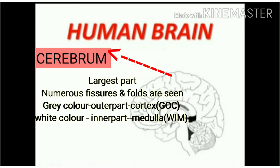The first one is the cerebrum — that is the largest part. The second one is the fissures and folds that are seen. The third one is the outer gray color, which is called the cortex.